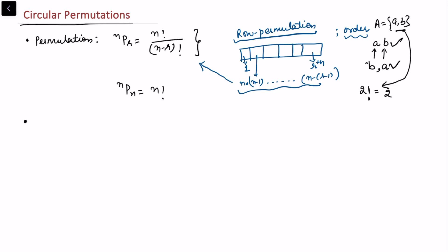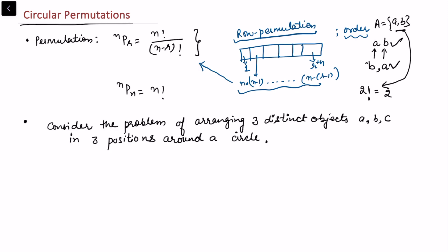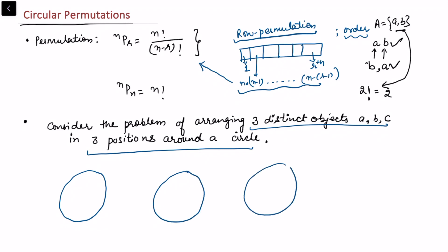For circular permutation, what matters is what comes in the adjacent position — in simple terms, who sits in the neighborhood of an object. To explain this, consider three distinct objects a, b, c arranged around a circle. We may also call this a round table problem. We have a round table with three chair positions where we need to arrange these three objects.